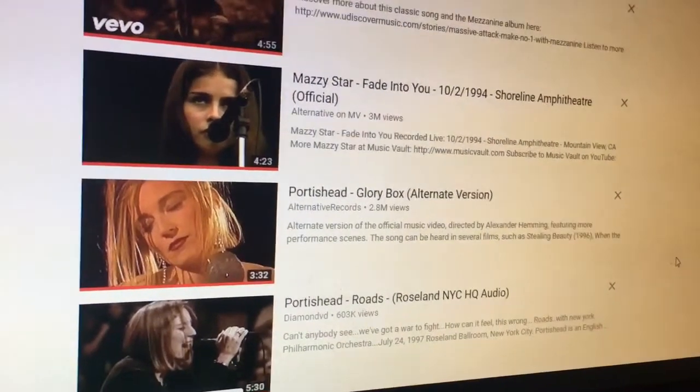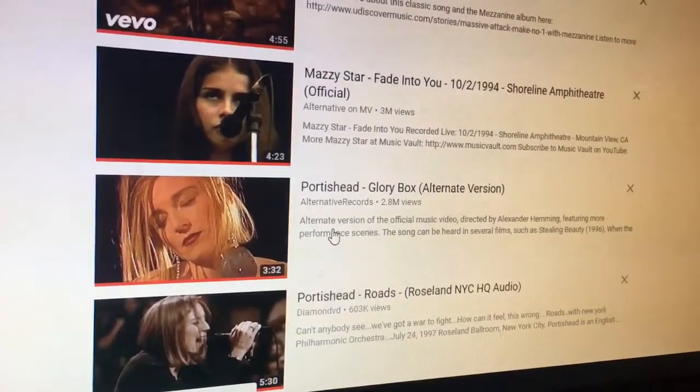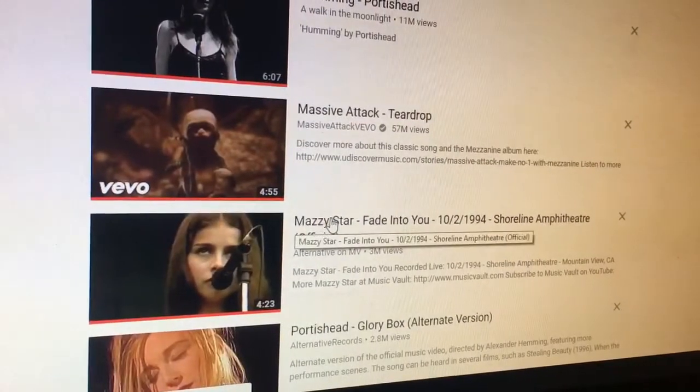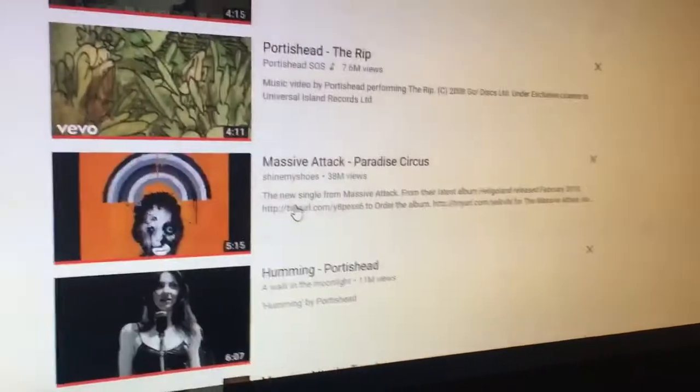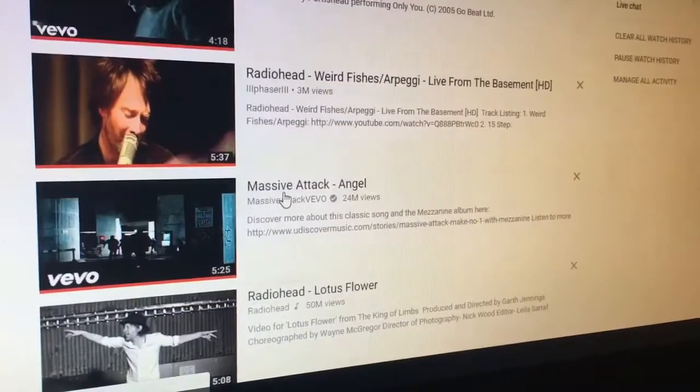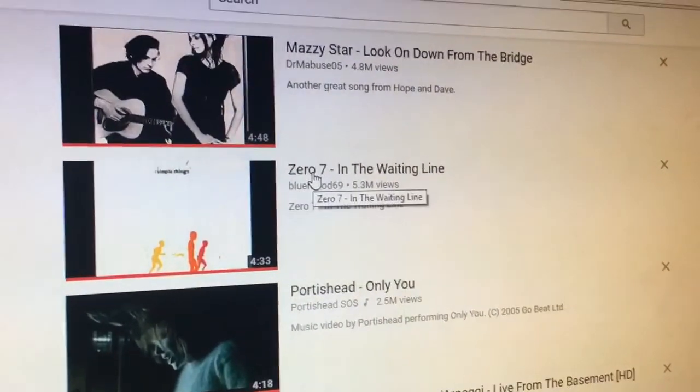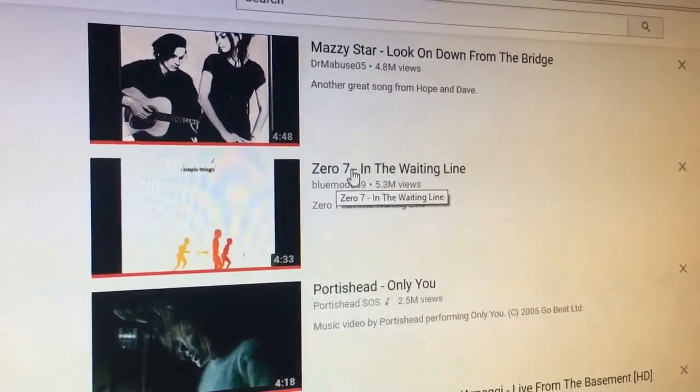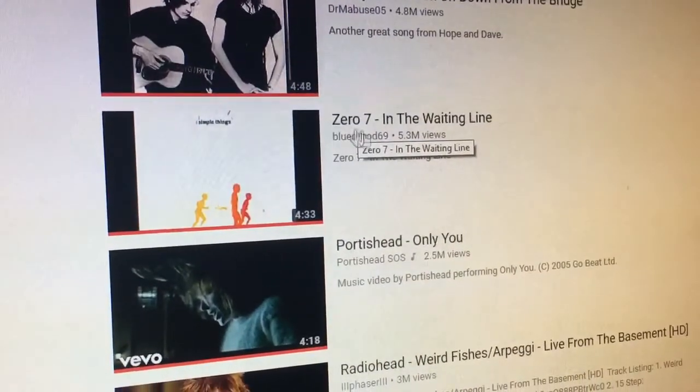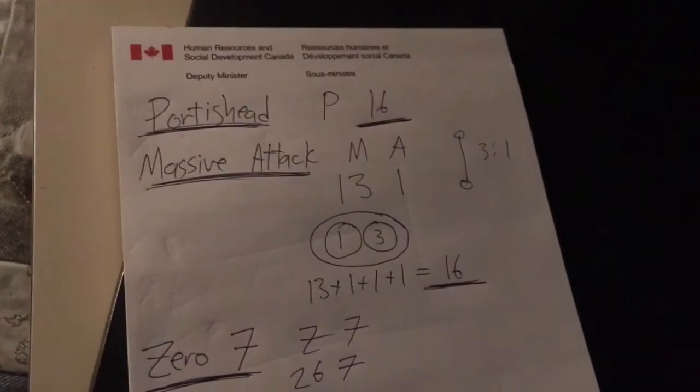So I was just minding my own business, listening to music - Portishead, which is one word, Mazzy Star, and Massive Attack. I didn't count Radiohead, but also Zero Seven with the seven spelled that way. I decided to write them down because I thought I picked up on a pattern, and then I wrote it down and confirmed my pattern.